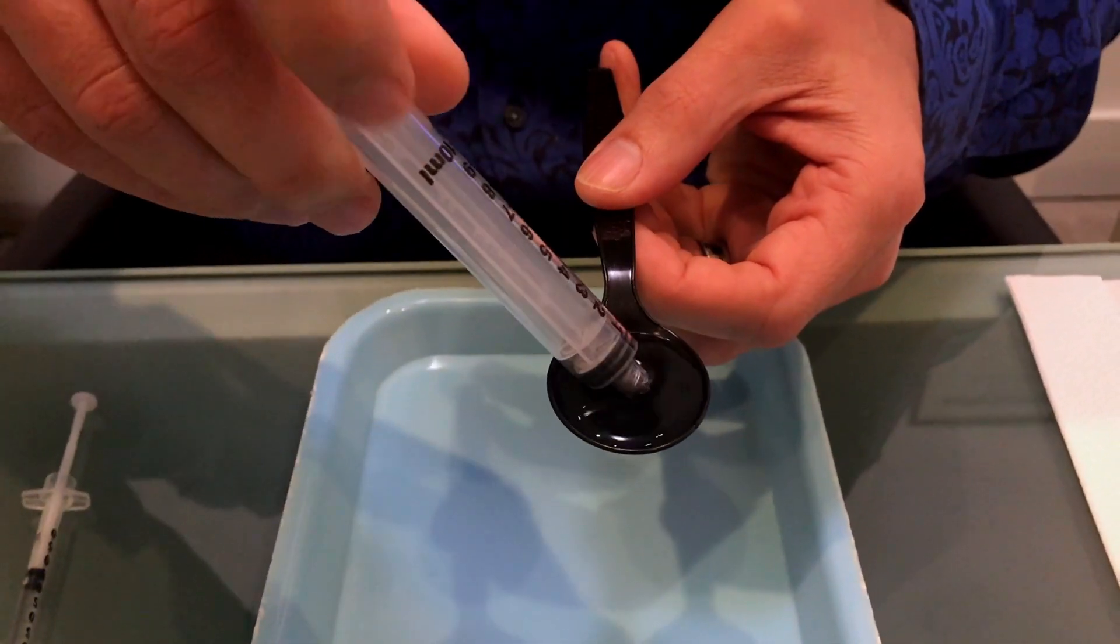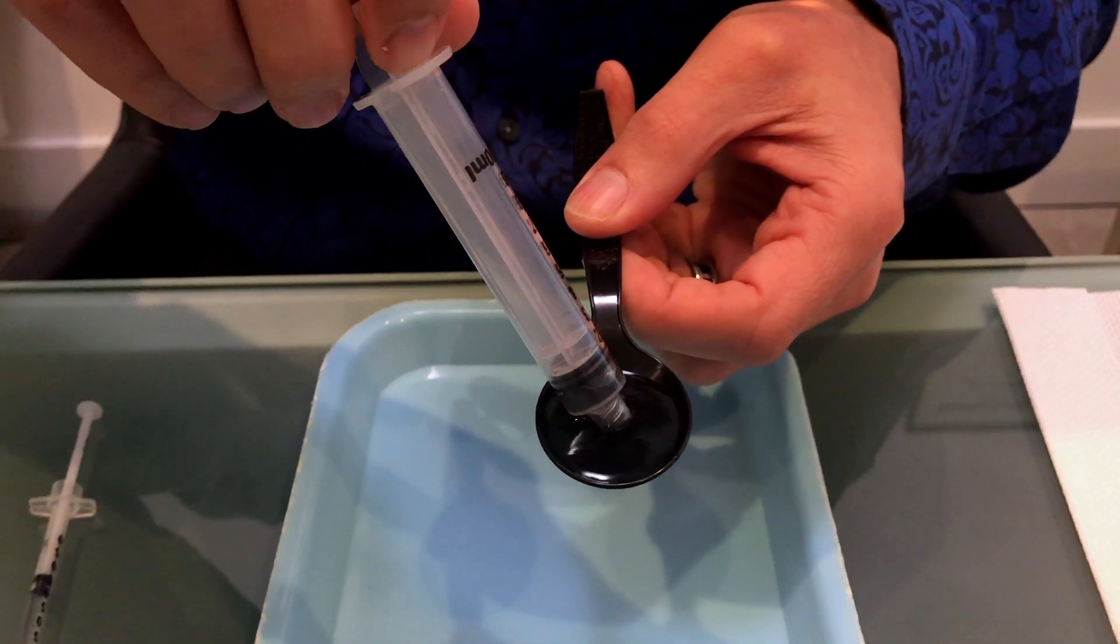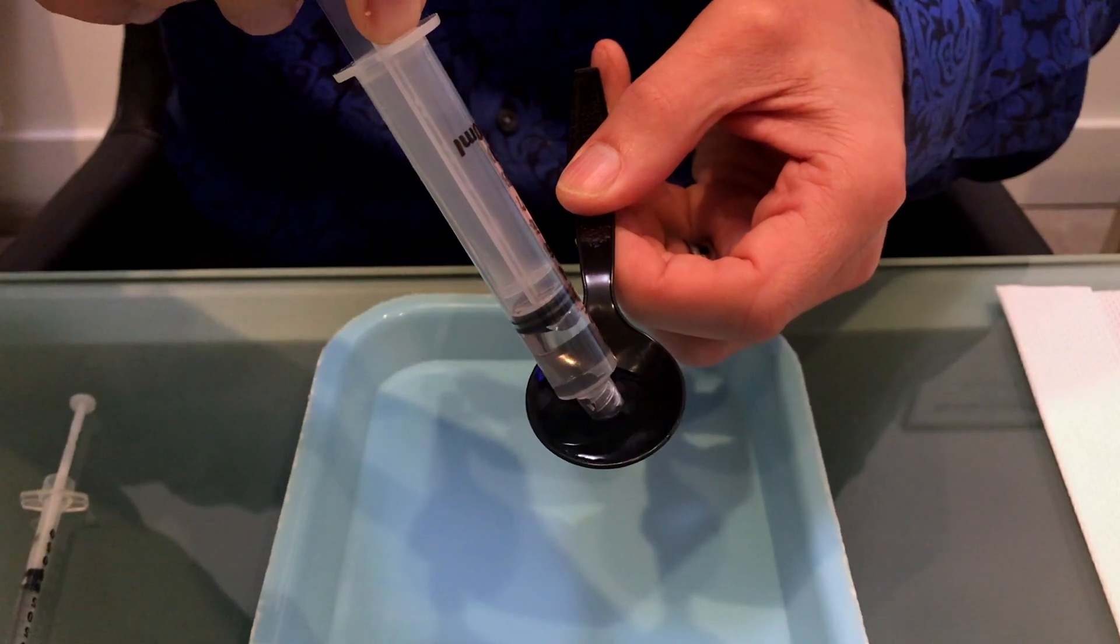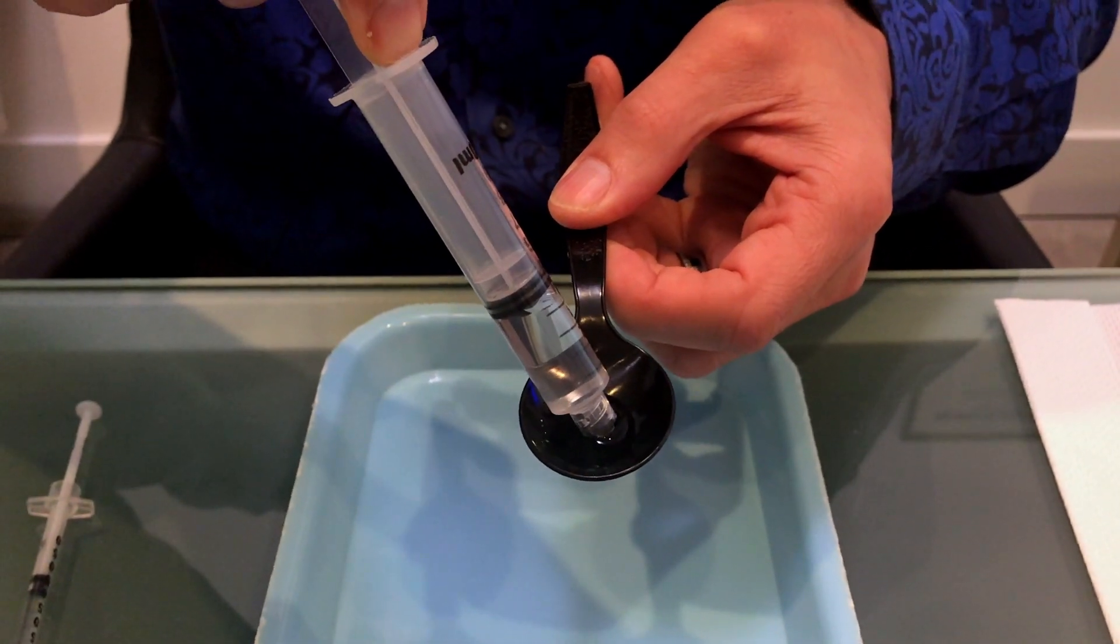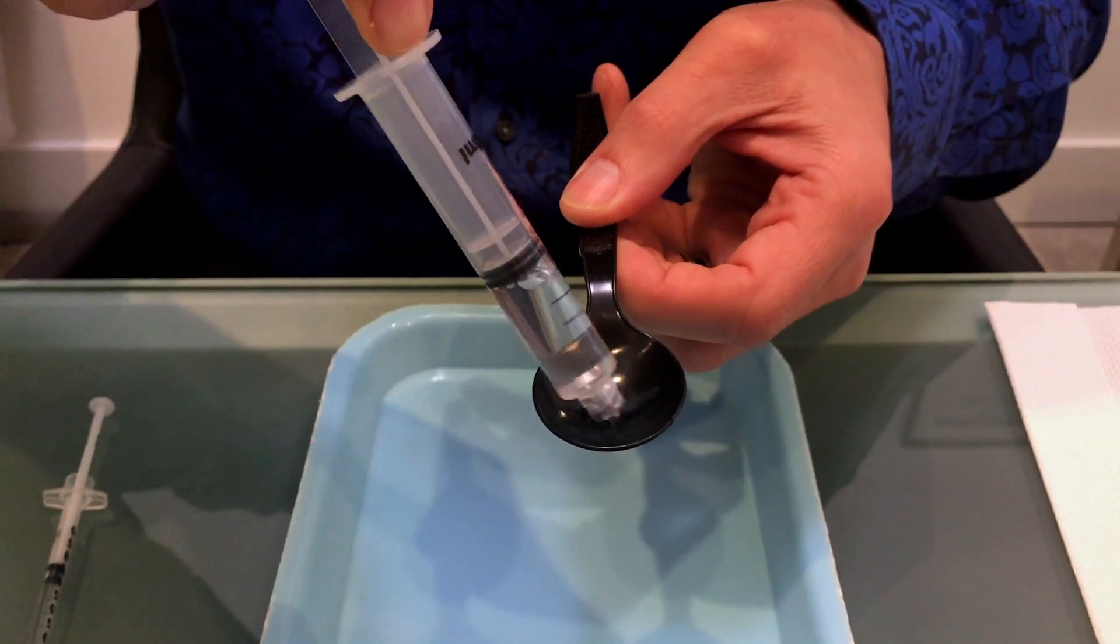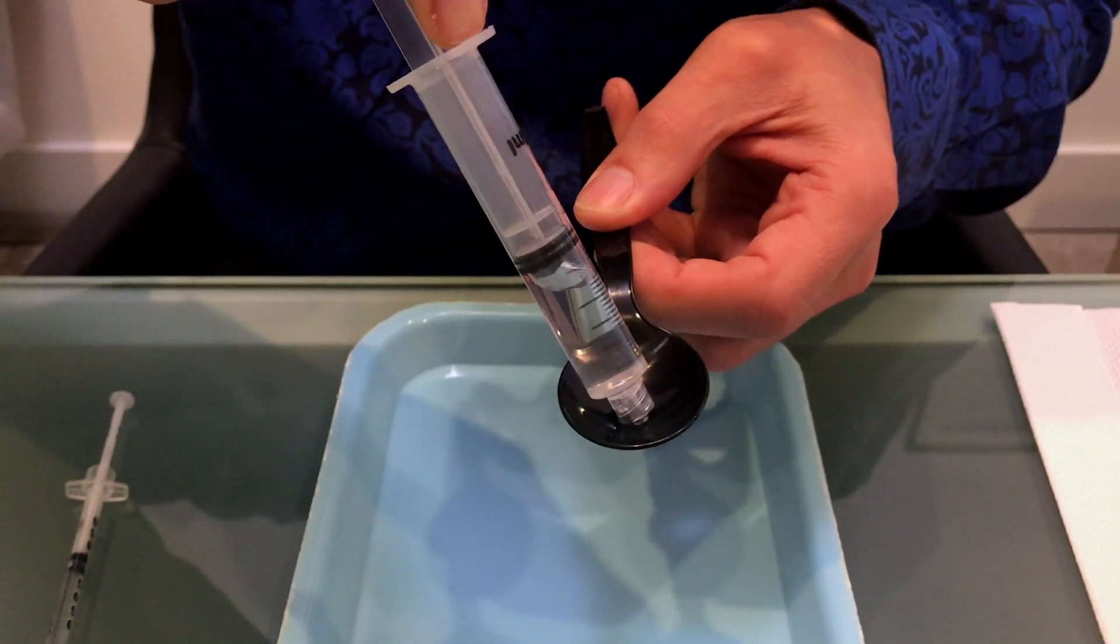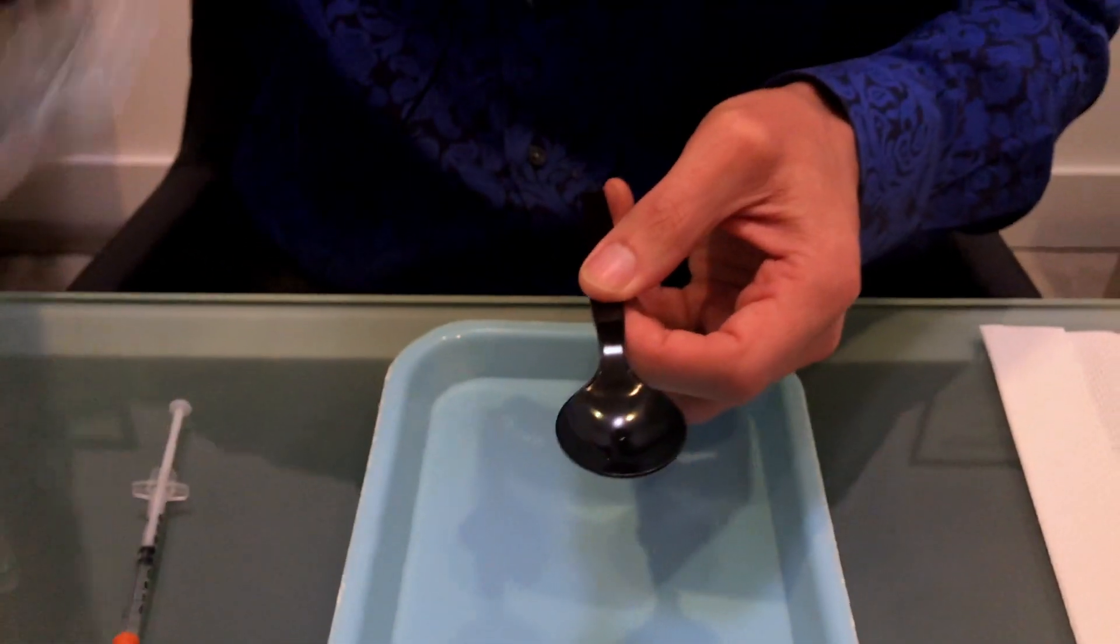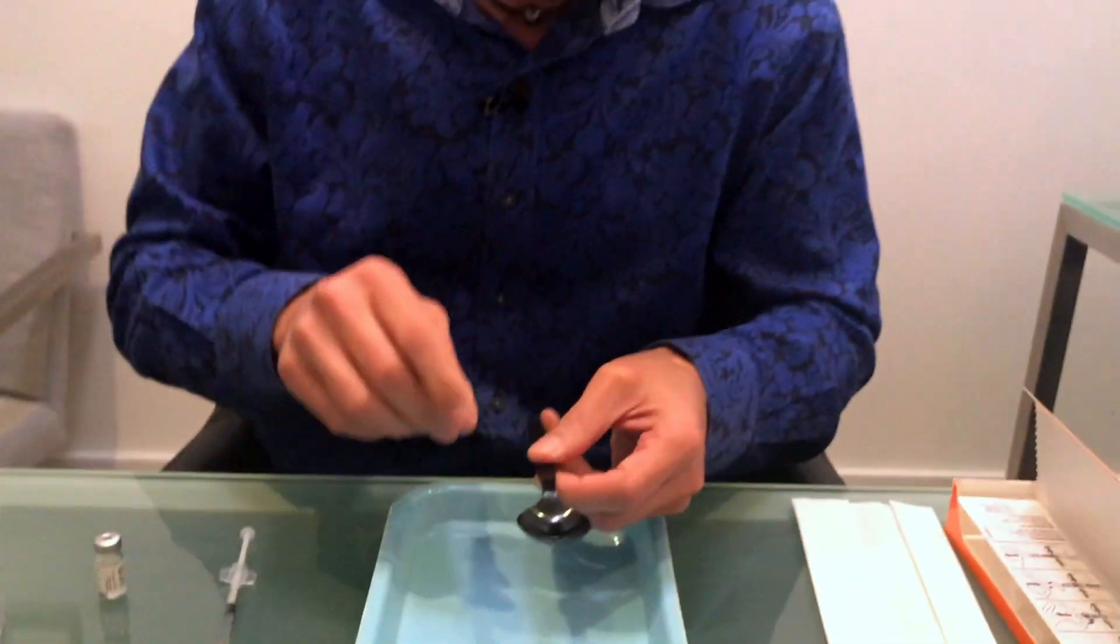So really five cc's is not a lot of filler and when you talk about putting in one cc or a half a cc you're talking about one-fifth to one-tenth of a teaspoon. So that's just the first thing I want to do.